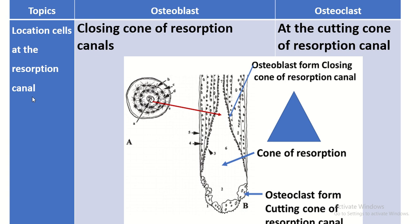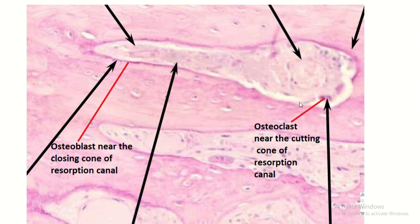Regarding the resorption canal, the osteoclast is usually situated near the cutting cone of the resorption canal, while the osteoblast is present in the closing cone of the resorption canal. This is the cutting portion and this is the closing portion — here osteoclasts are present and there osteoblasts are present.